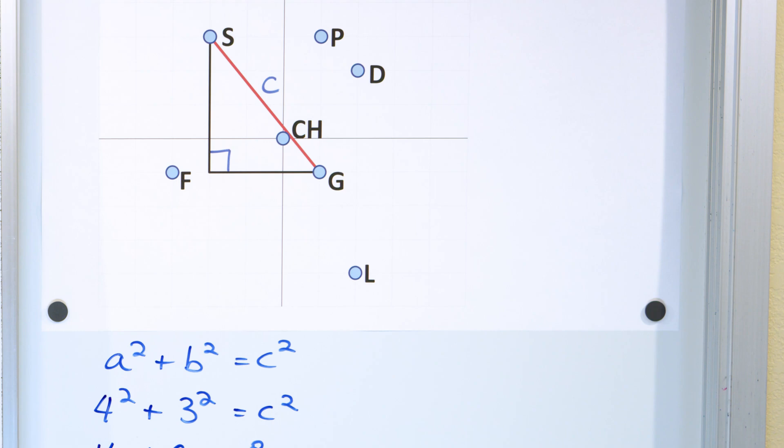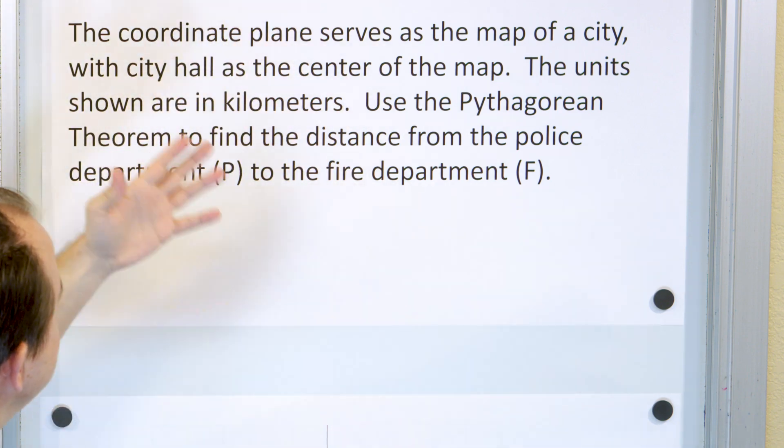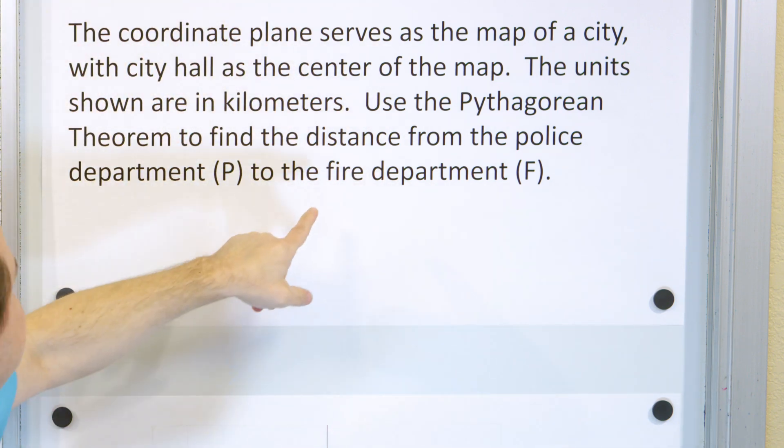All right, let's take this one down and do our next problem. All right, problem number two. Again, coordinate plane, map of the city, kilometers, all that stuff is the same.